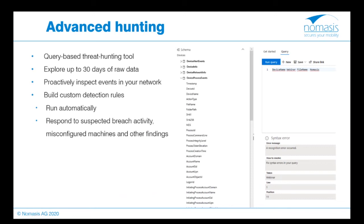Another powerful feature is Advanced Hunting — a query-based threat-hunting tool that lets you explore up to 30 days of raw data. It allows you to inspect events across your network to locate threat indicators and entities, enabling unconstrained hunting for both known and potential threats. You can use the same threat-hunting queries to build custom detection rules that run automatically to check for and respond to suspected breach activity, misconfigured machines, and other findings — for example, filtering by process ID, device name, or filename.